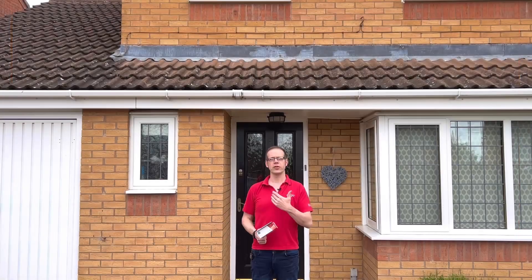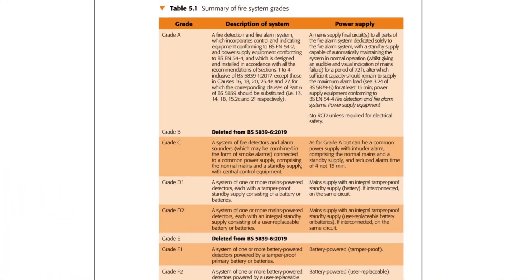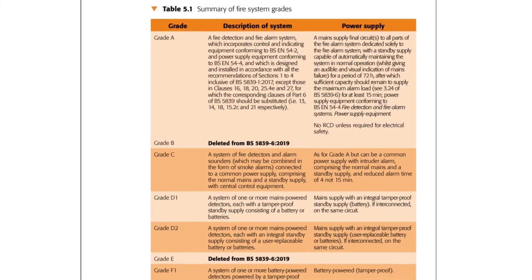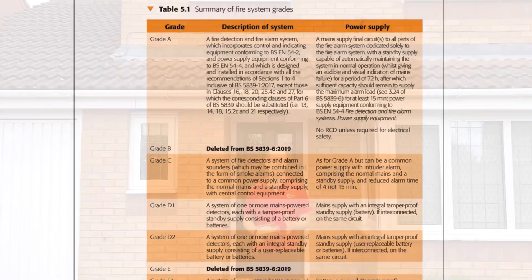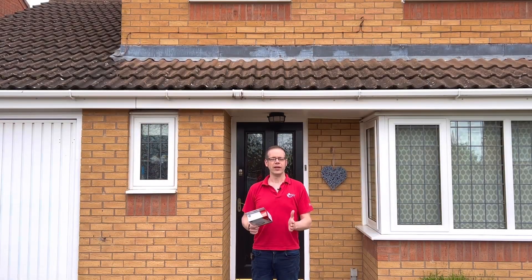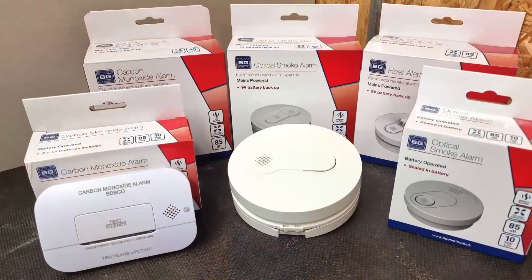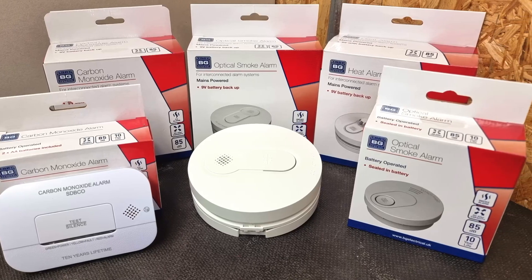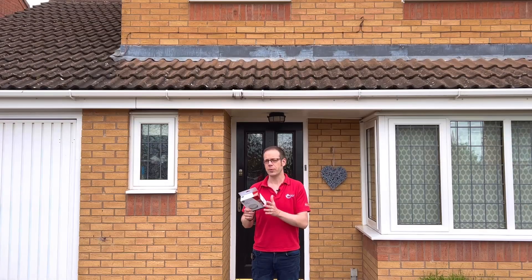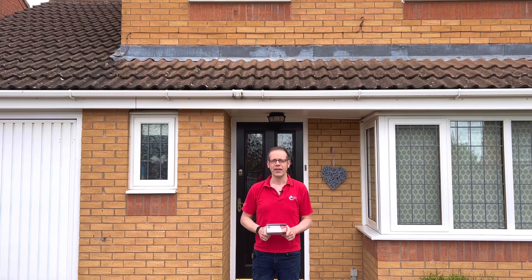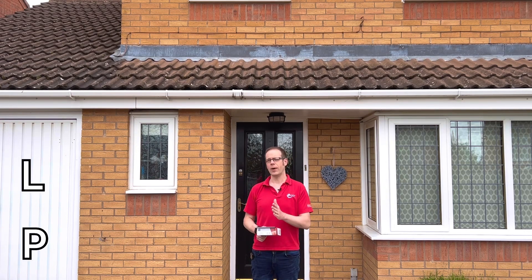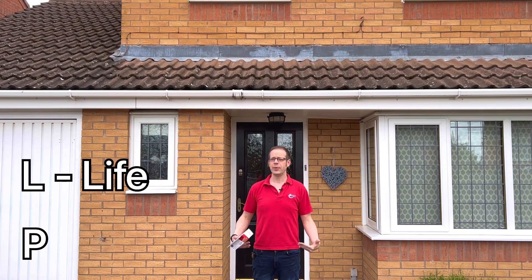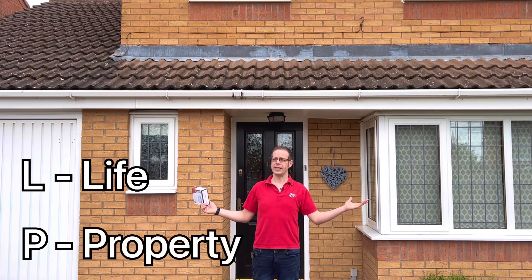We've discussed grades of fire detection in a previous video and now we're looking at categories. What's the difference? Well, a grade in this context is all about the system and the equipment being used, whereas categories are more about what the fire detection system is protecting. The categories break down into two areas with the identifying letters L and P, where L stands for the protection of life and P stands for the protection of property.